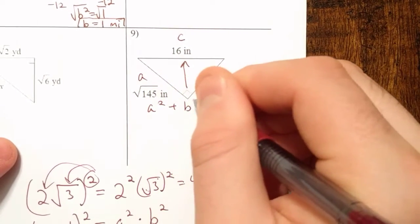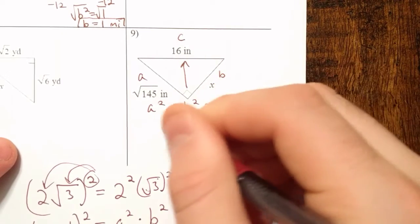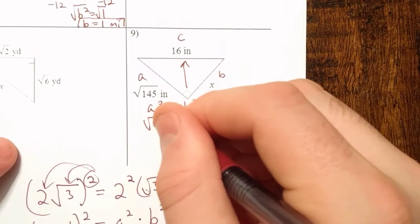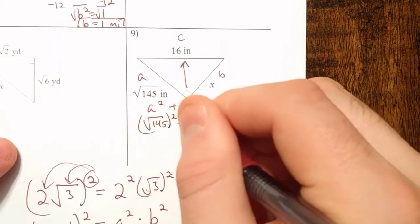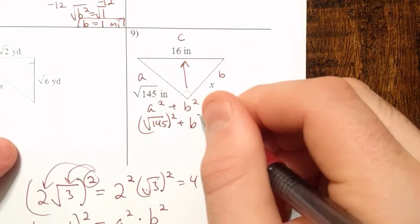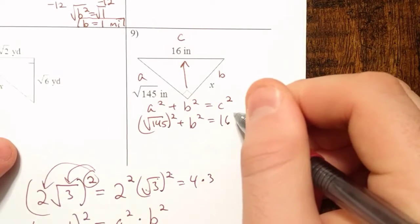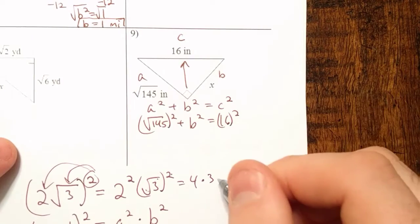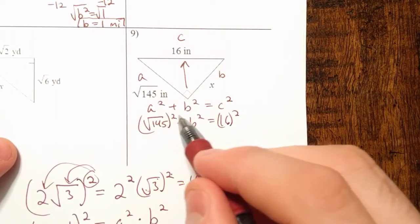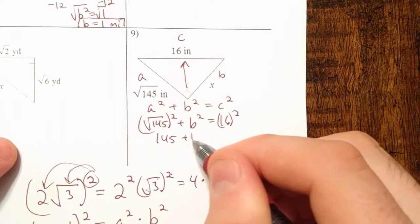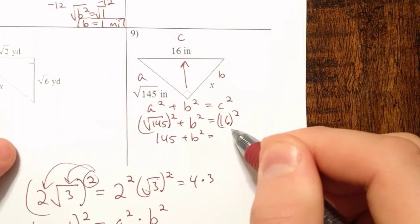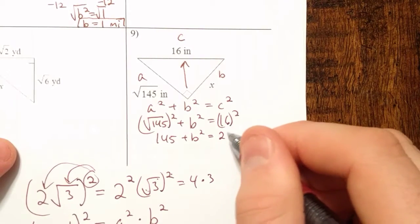So our equation is A squared plus B squared equals C squared. That's going to be the square root of 145 squared plus B squared equals 16 squared.